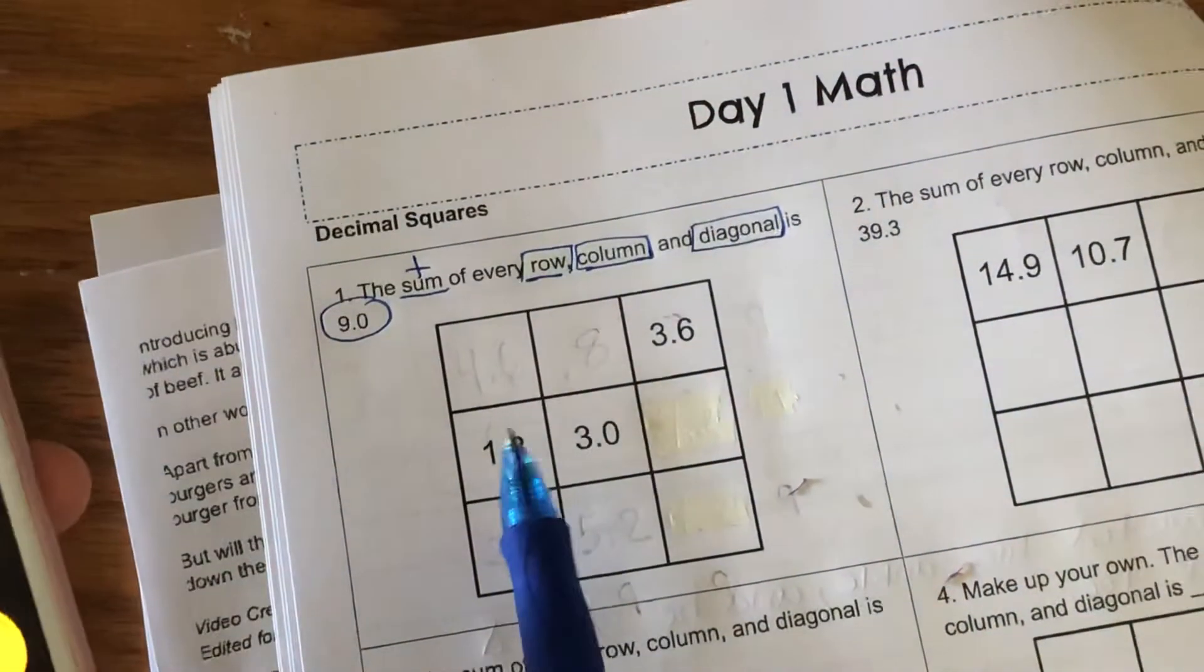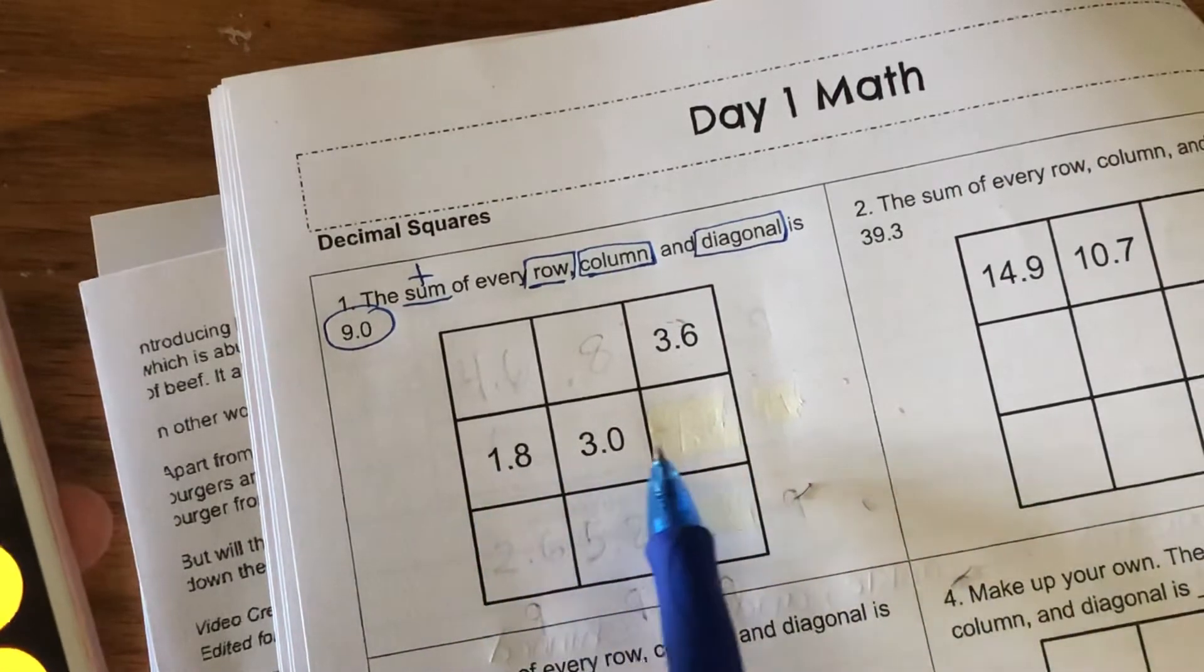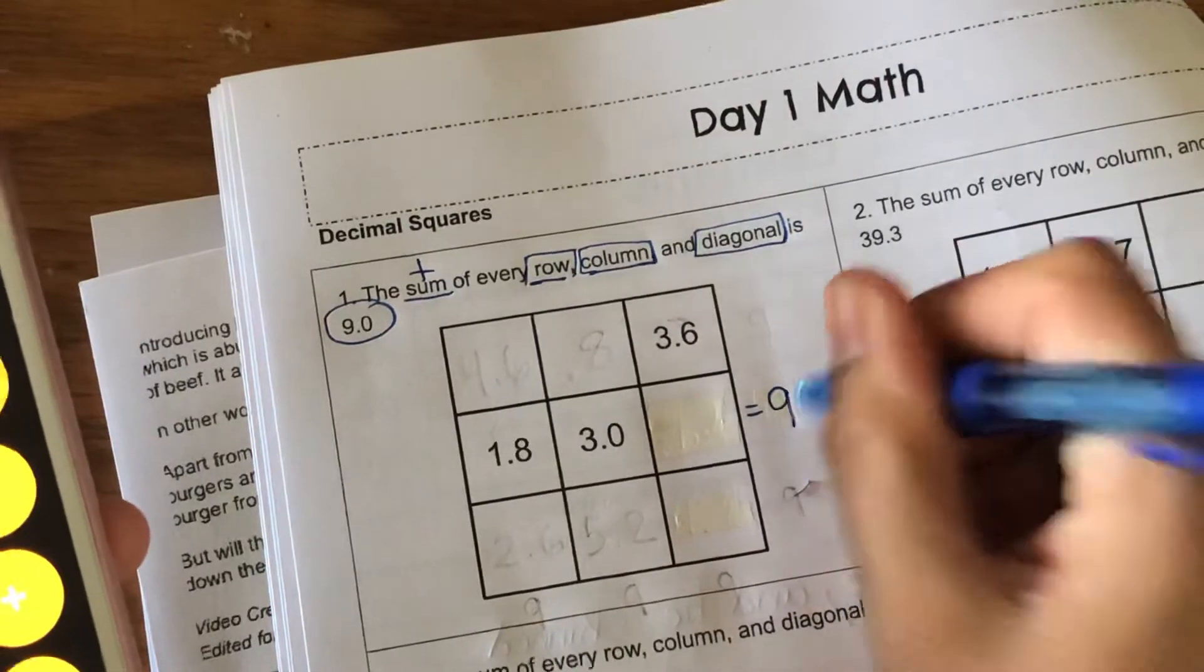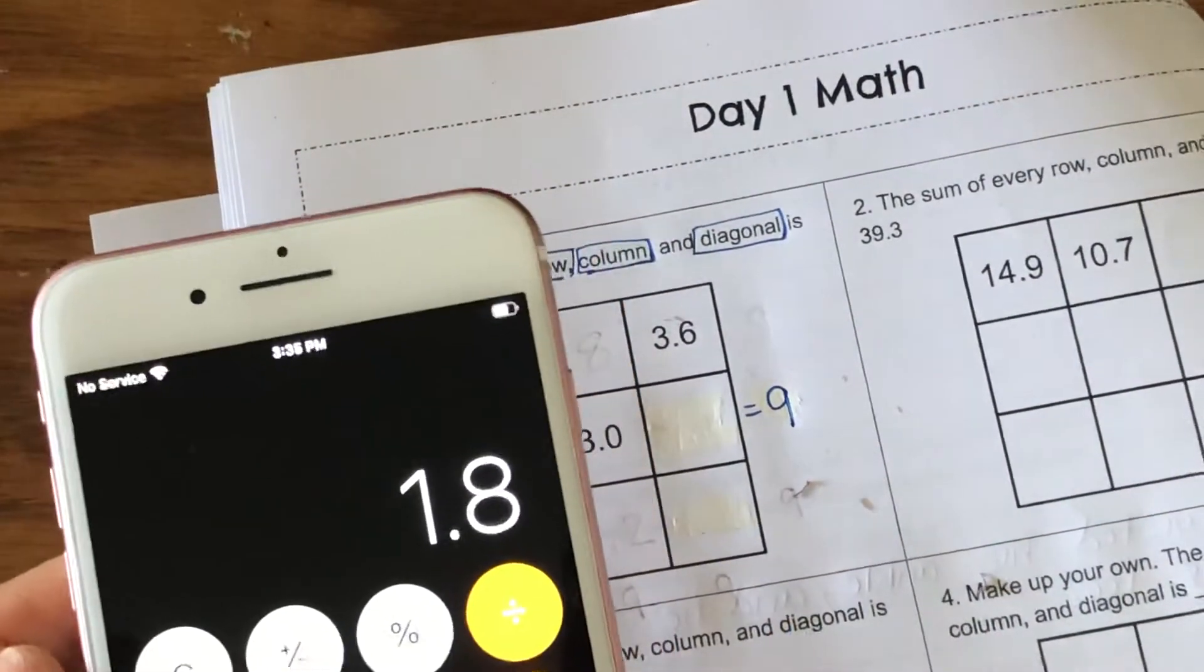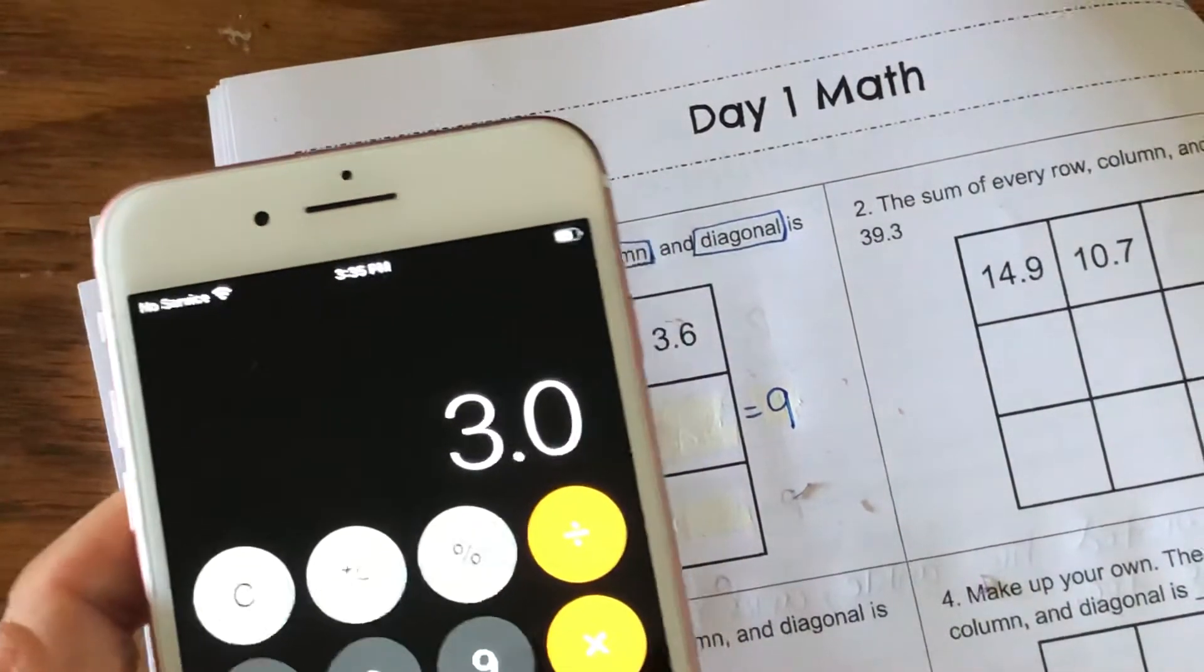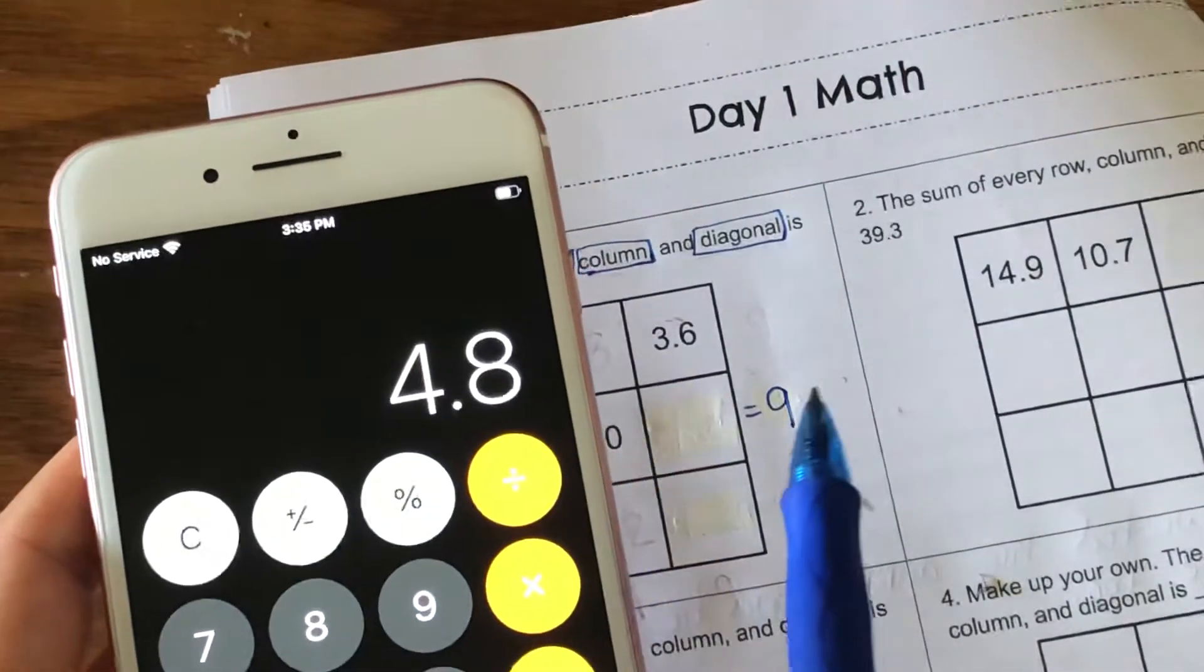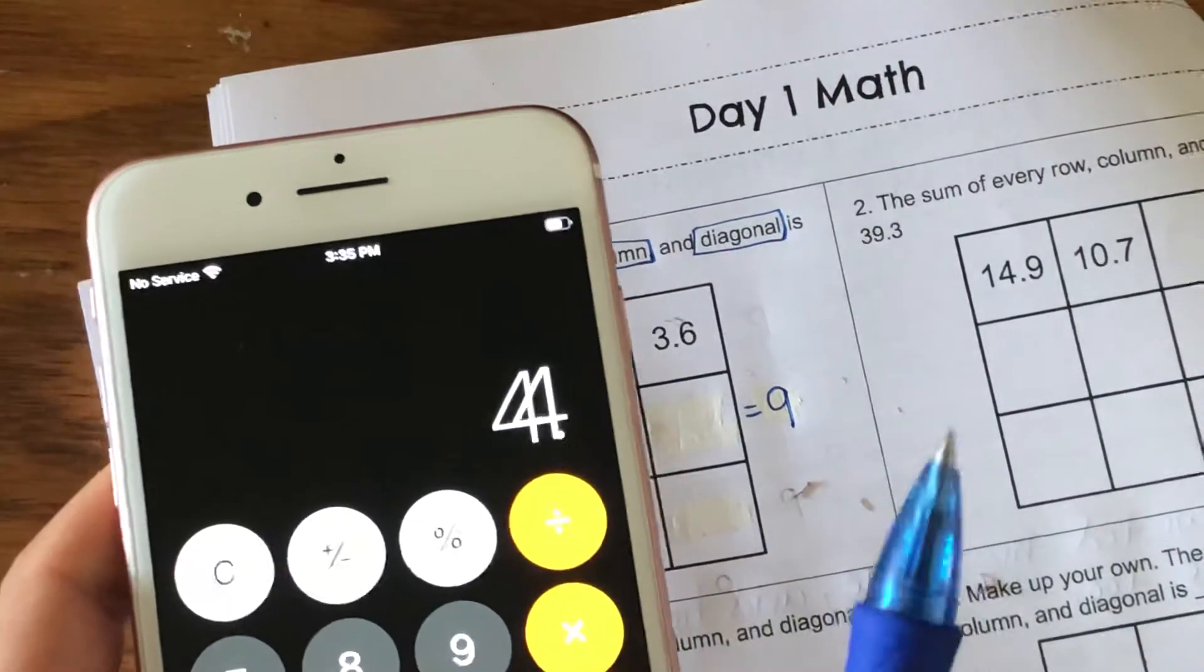This whole row needs to be a total of nine, so let's see what these two are. 1.8 plus 3.0, which is basically 3, equals 4.8. I'm gonna take 4.8 from 9, so 9 take away 4.8 equals 4.2.